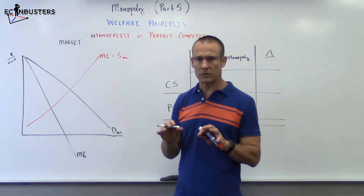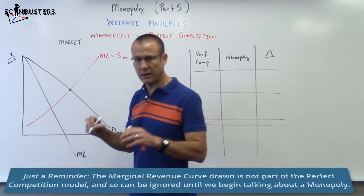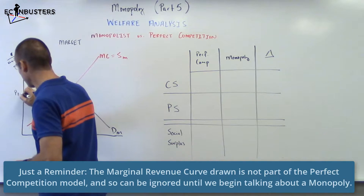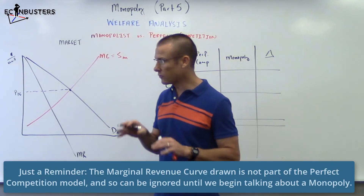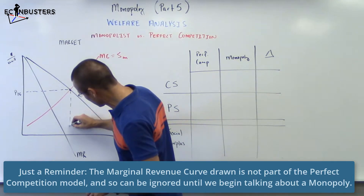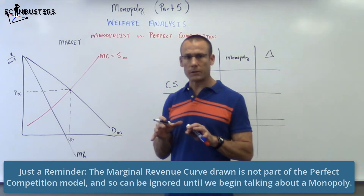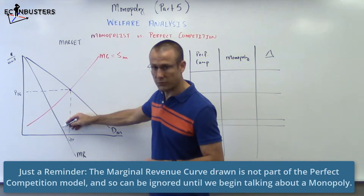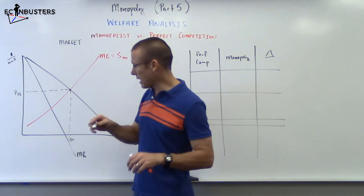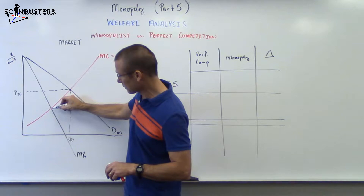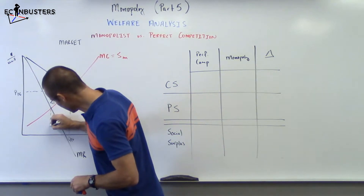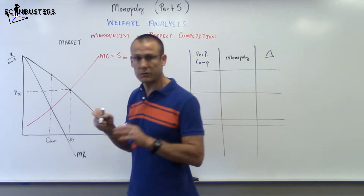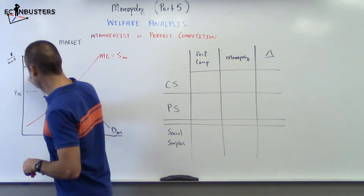First, think of this as perfect competition: supply and demand intersect and set the price, so that's price PC and quantity PC. However, if we have a monopolist, we have the MR curve to consider. The monopolist produces until MR equals MC — that intersection point. We bring that down to get Q monopolist, then go up to the demand curve to get price monopolist.